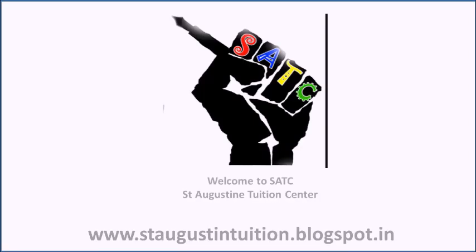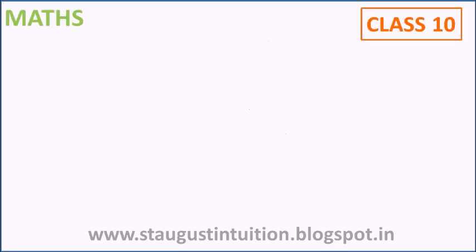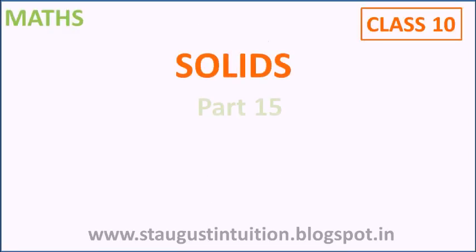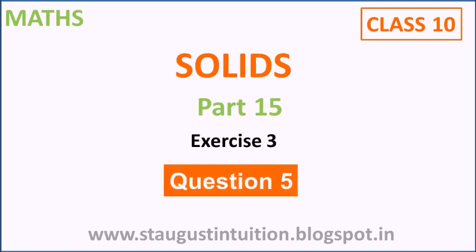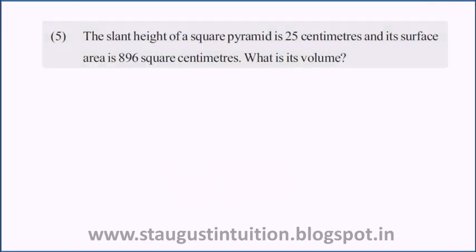Hello friends, welcome to SART Central Institution. I am going to ask you about question number 5. The slant height of a square pyramid is 25 centimeters and its surface area is 896 square centimeters. What is its volume?